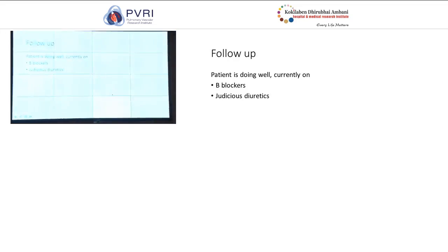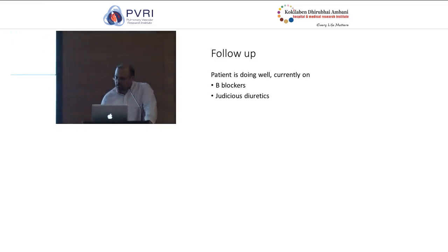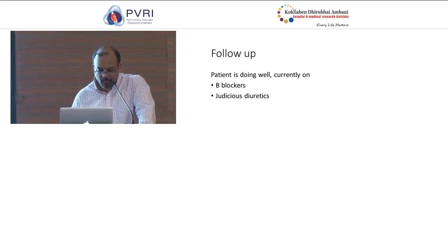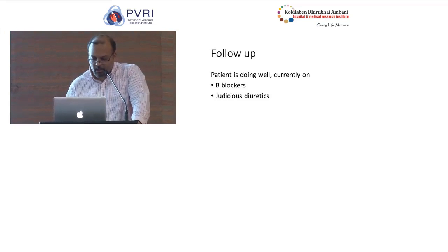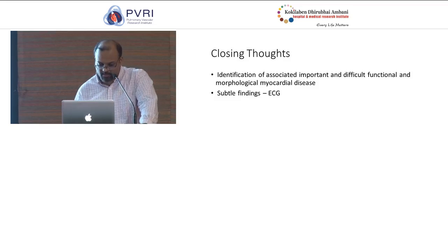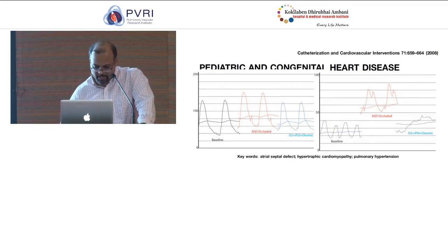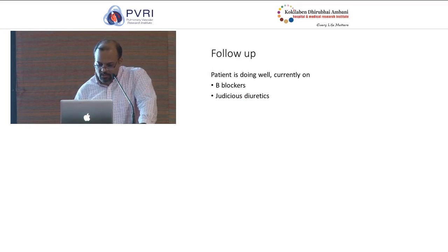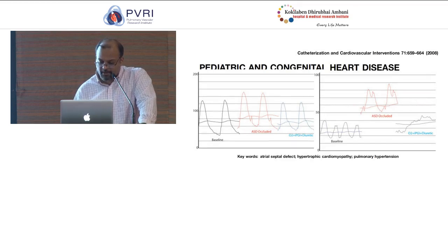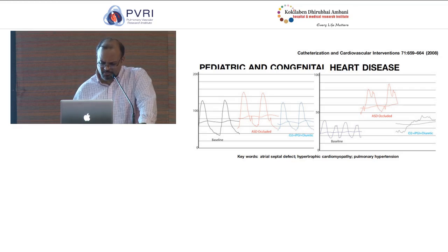Basically, this was a patient with apical HCM with an ASD, and also obstructive sleep apnea. He was continued on beta blockers and judicious use of diuretics and is currently doing well. Reviewing the literature, we found a few cases of apical HCM associated with ASD managed differently. A study from Japan published in the International Journal of Cardiology described a patient with apical HCM and ASD with a Qp/Qs of more than 3.1:1, where surgical patch closure was performed and the patient did well.